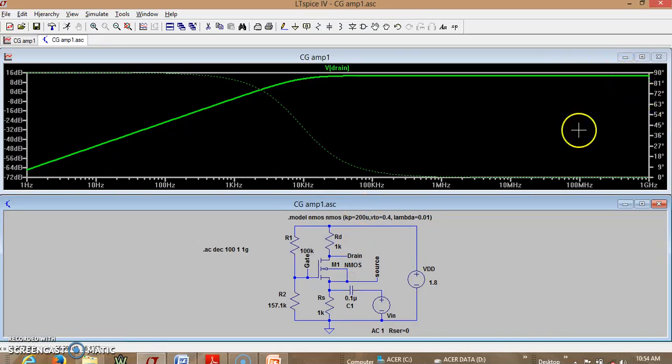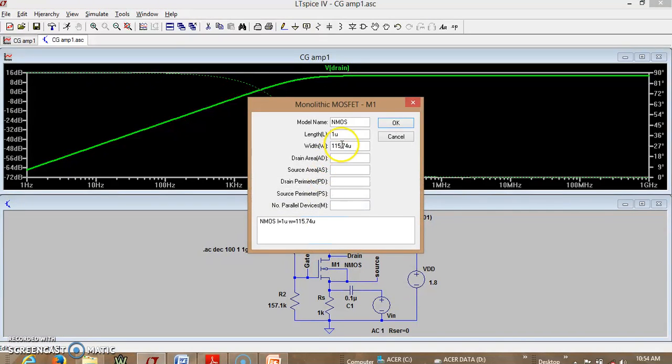You can see at higher frequency it is not falling because we are not editing any CGSO or CGDOs and we will also have a look at what is W/L of this MOSFET which was found out to be 1 micro meter is the length and width is 115.74 which was actually calculated in our values.